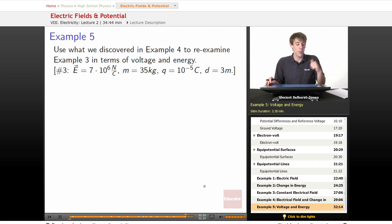So in number 3, we had an electric field, we had a mass of an object on a frictionless surface, we had a charge for that object, and we had a distance that it traveled, right?